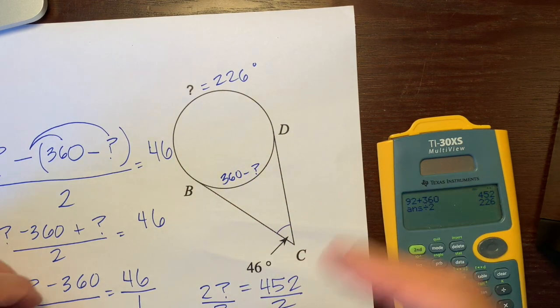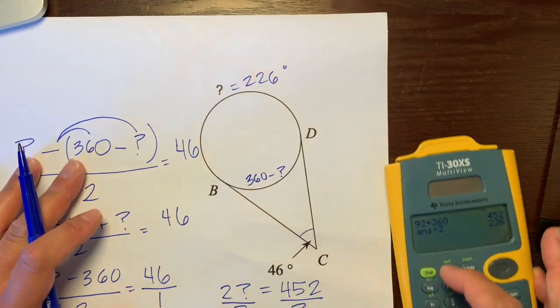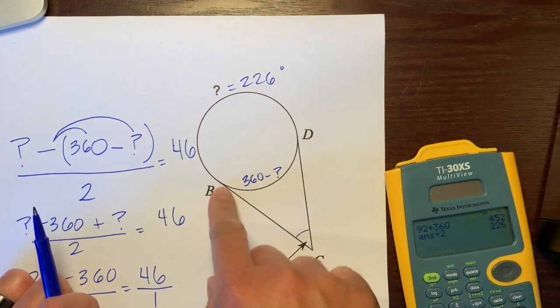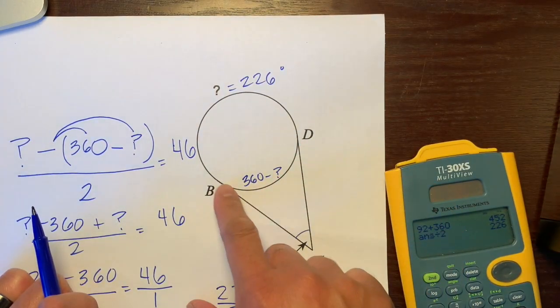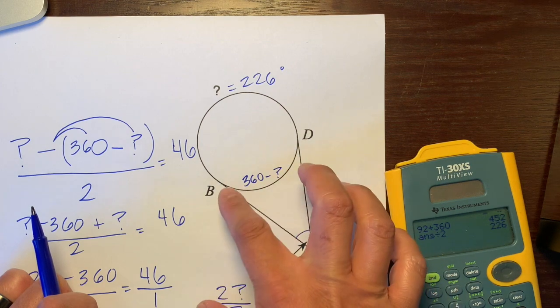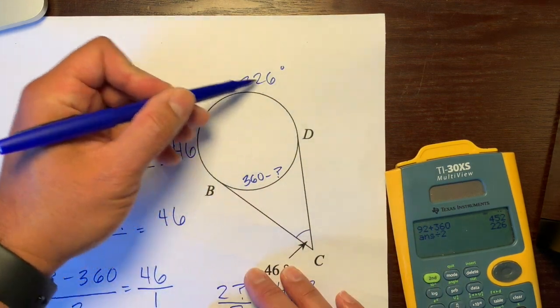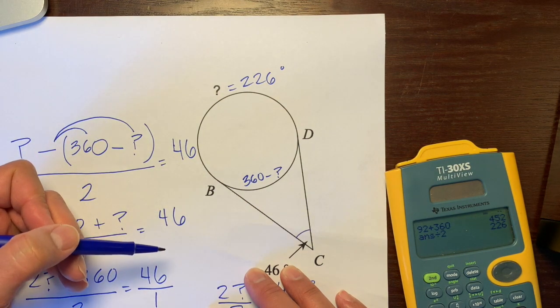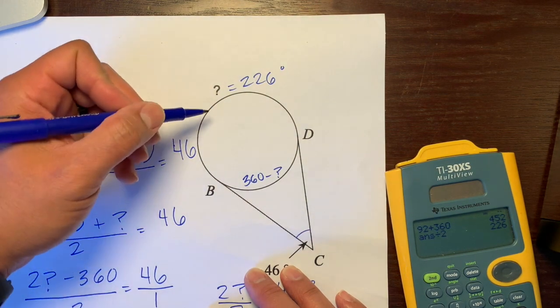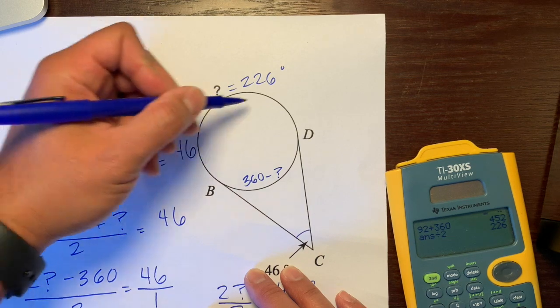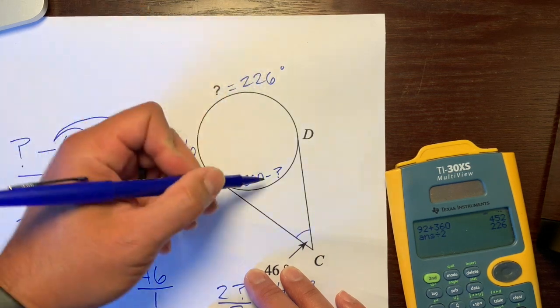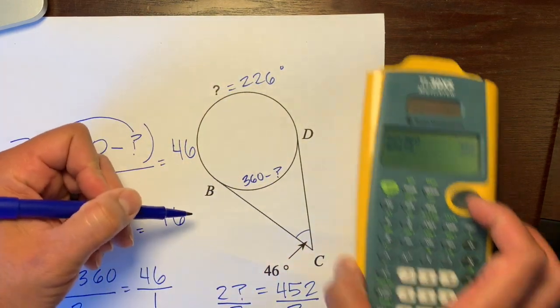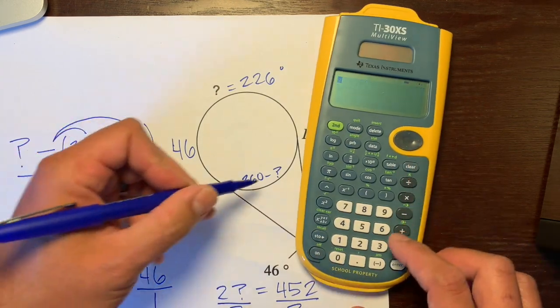Again, let's just go back. I think the toughest part was figuring out what this arc was. Just remember, this arc is whatever is left over from this arc when you subtract it from 360 degrees. So this arc is 226 degrees.